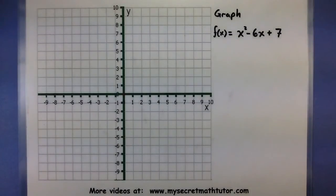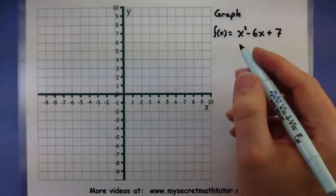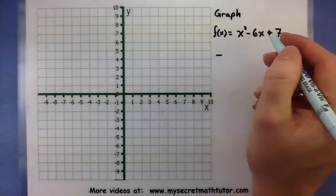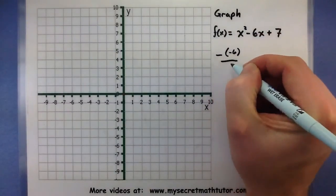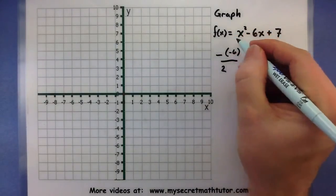So we're going to graph the function x squared minus 6x plus 7. And we're going to start off by trying to find that vertex. So I need my x-coordinate. I'll use negative the value of b, so negative 6, all over 2, my value of a, 1.